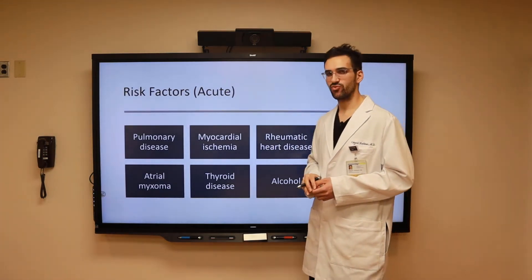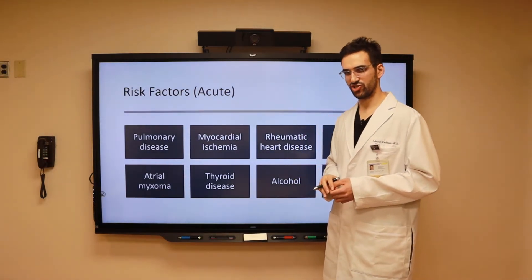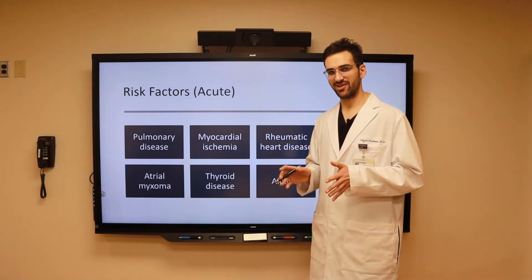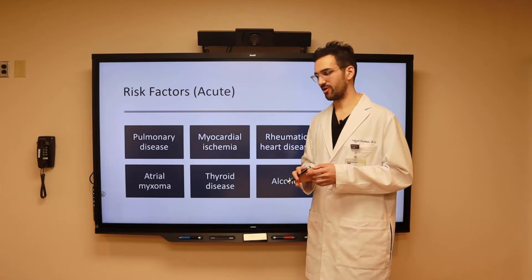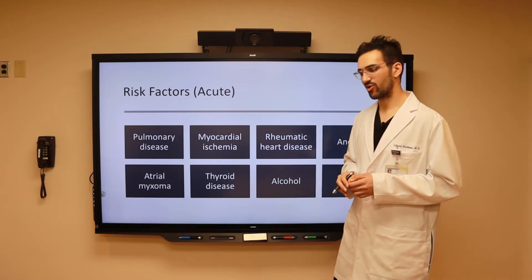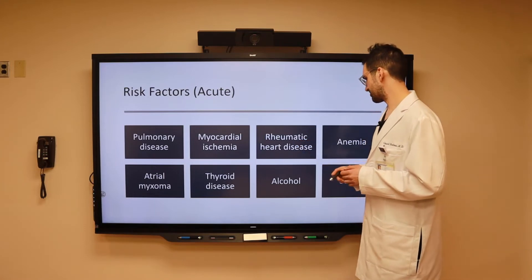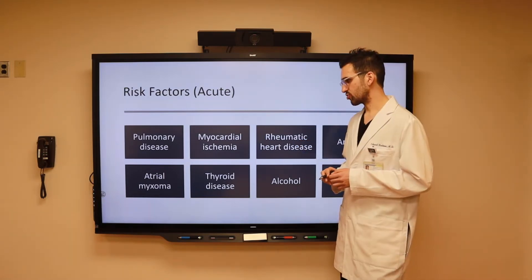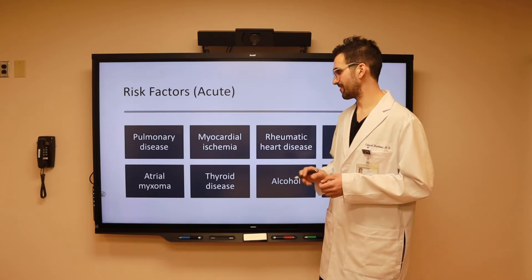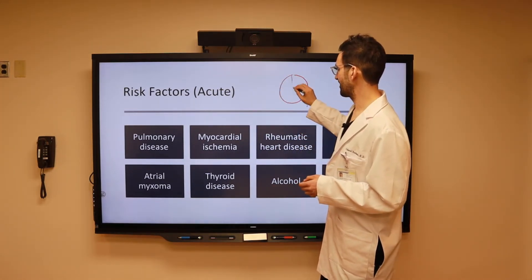When it comes to the risk factors for the development of atrial fibrillation, especially acutely, this includes anything that places strain on the heart. This can include pulmonary disease, myocardial ischemia, rheumatic heart disease, anemia, and atrial myxomas. This is not difficult to understand, as a structural issue within the heart can predispose to atrial fibrillation.